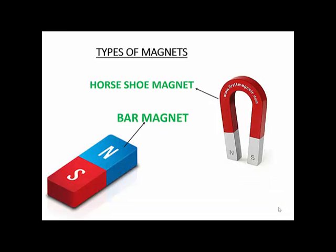With this introduction, we also studied that there are two types of magnets. The shape is different but magnets are the same. A straight magnet is called a bar magnet, and a bent magnet is called a horseshoe magnet.